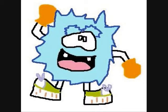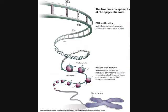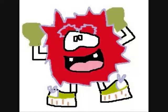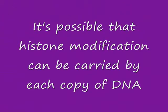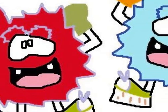Histones are proteins that package and order the DNA into structural units called nucleosomes. They play a huge role in gene regulation. Sometimes, histones could undergo post-translational modifications, which could change the shape of the histone sphere. DNA is not completely ruined during replication — it is also possible that the modified histones can be carried into each copy of DNA. By altering the shape of the histones around it, these modified histones would ensure that the differentiated cell would stay differentiated and not convert back into being a stem cell.